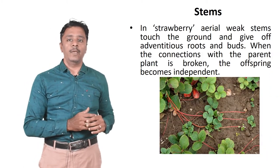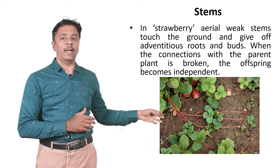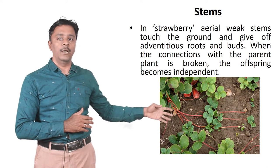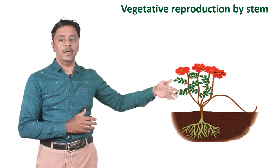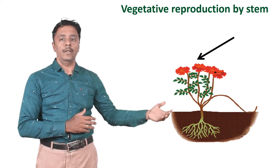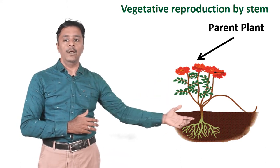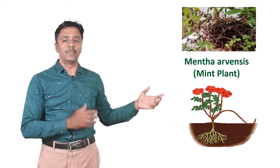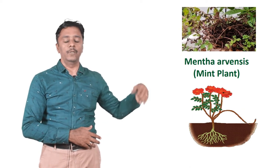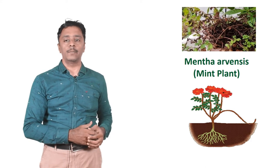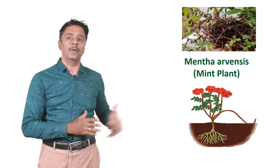The next one is stems. In strawberry, aerial weak stems touch the ground and give off adventitious roots and buds. When the connection with the parent plant is broken, the offspring becomes independent. In vegetative reproduction by stem, a plant grows stems that enter the soil, and the parent plant gives rise to a stem nearby that enters the soil and gives rise to a new plant. For example, you can see Mentha arvensis, the mint plant, which always grows nearby. You can see this kind of growth in that plant.